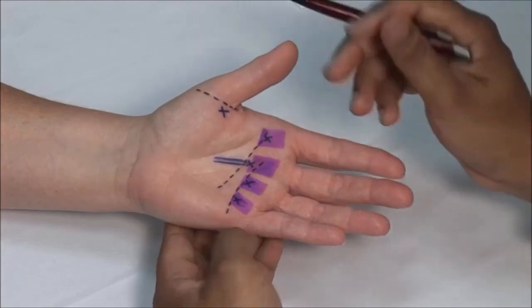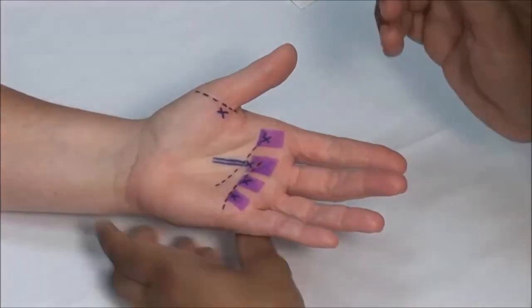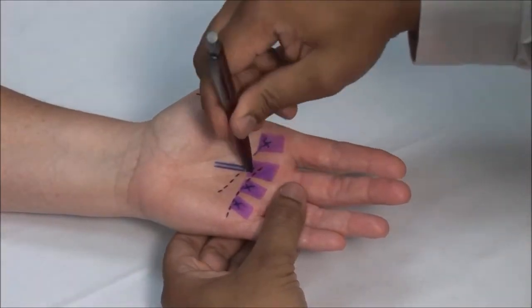Mark the injection point with a retractable pen. In this case I'm using the third flexor tendon for demonstration.